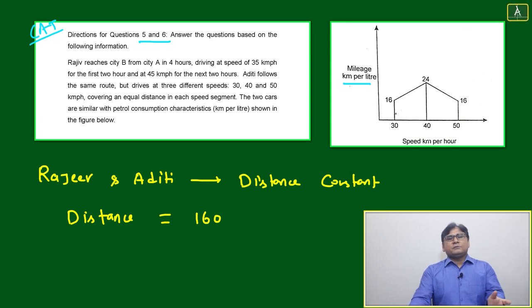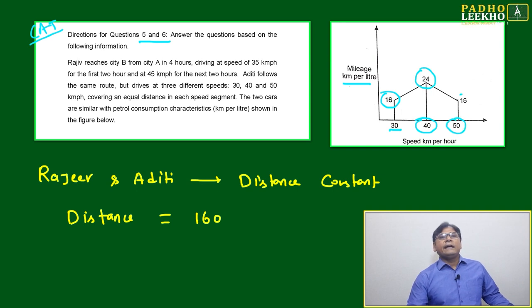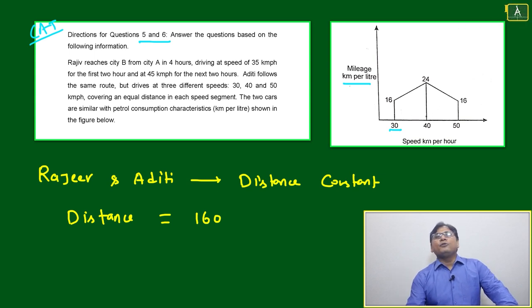If speed, as per this question, is 30 then your vehicle is giving mileage 16. If your speed increases to 40 then mileage is 24, and again at 50 then again 16. This means both relations are given - direct proportional and inverse proportional. From 30 to 40, if you increase the speed, your mileage is increasing. But from 40 to 50, if you increase the speed, mileage is decreasing. Here it is directly proportional, here it is inversely proportional.